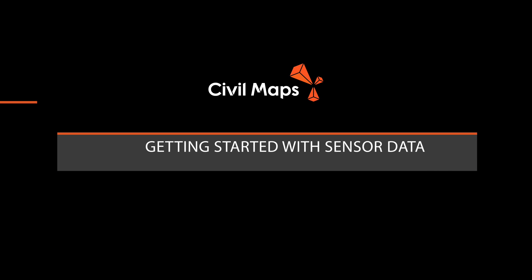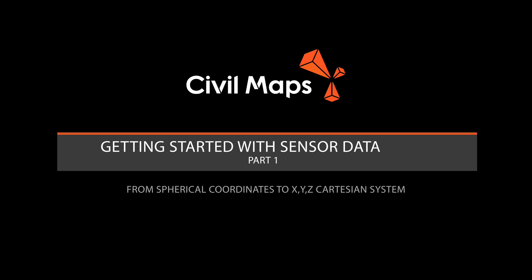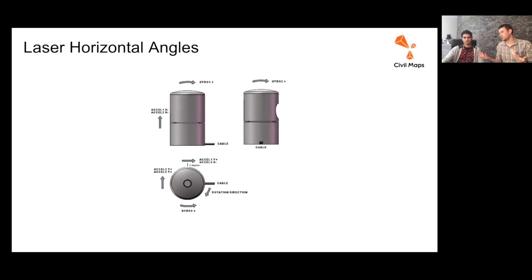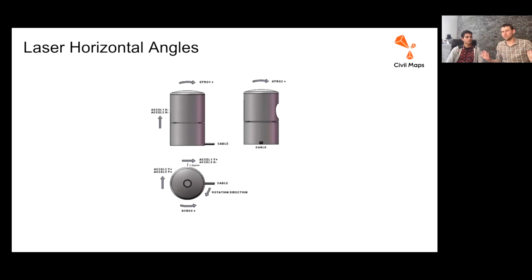I'll talk a little bit about how to convert from the laser shot out at a distance to an XYZ Cartesian coordinate system, which is the easiest way to work with the data. The first aspect is the horizontal angle of the lidar. The current mechanical ones on the market will spin around mechanically, and as the lasers are shot out at different angles, it records what that angle was. This gives you a 360-degree view of what's happening around the lidar.